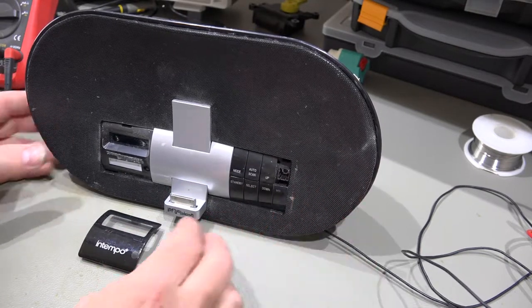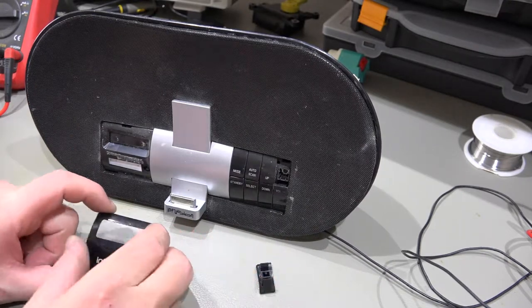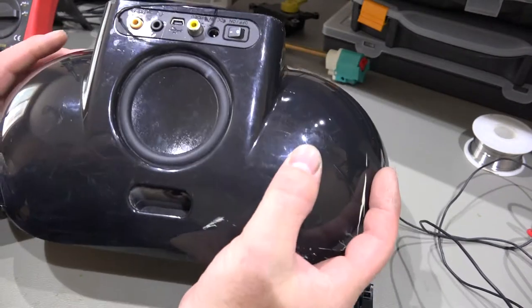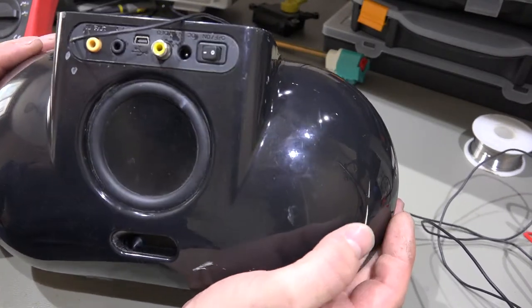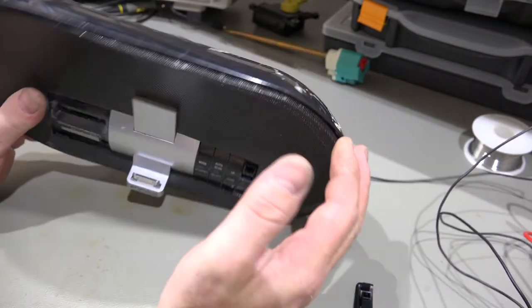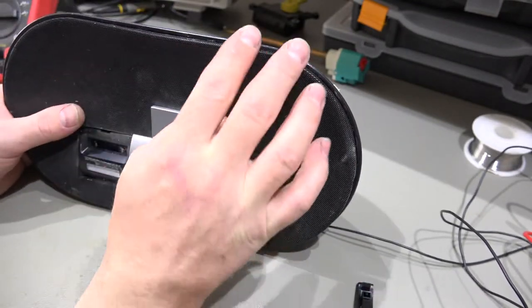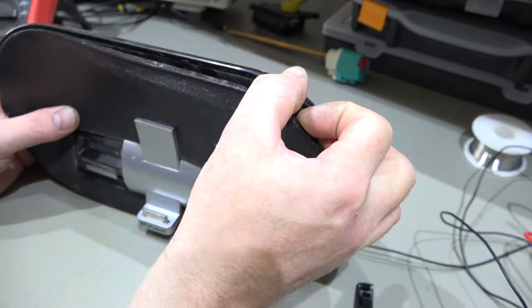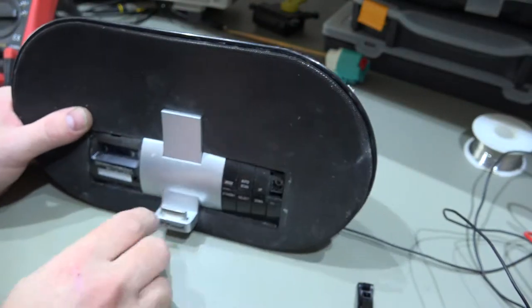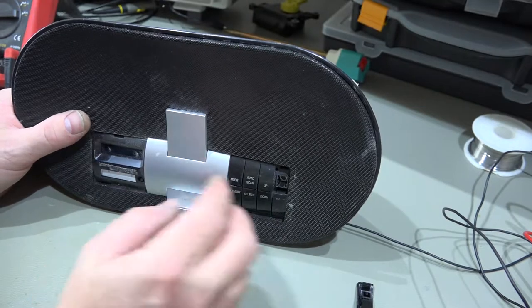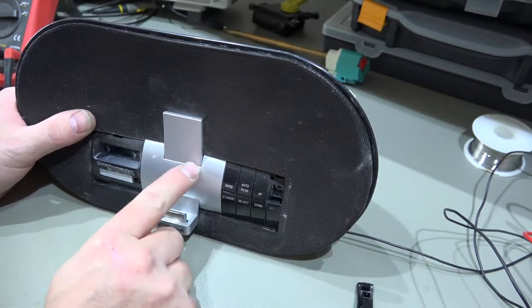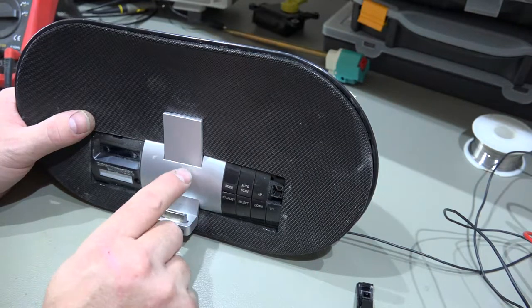Now, I've already started trying to get this thing apart. It's not clear at first how you actually undo this thing. There are no screws on the back at all, nothing on the bottom. So they must be hidden under here. And in fact, they actually are. You can start to see some screws, but you've got this section here which is stopping me from removing this grill. So I'm imagining that this plastic cover here needs to come off.